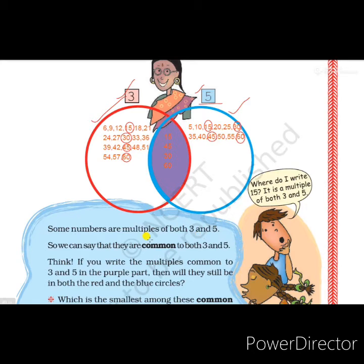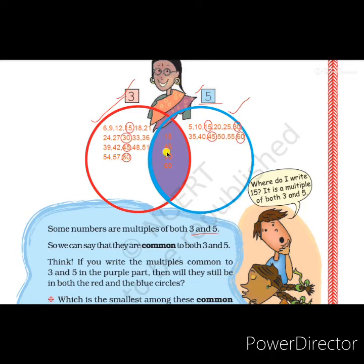Now we have to find the numbers that are multiples of both 3 and 5. The numbers I have circled are: 15, 30, 45, and 60. We can take as many multiples as we need, but I have written up to 60 only. From this, we got 4 common multiples, and these 4 common multiples we write in the purple color.